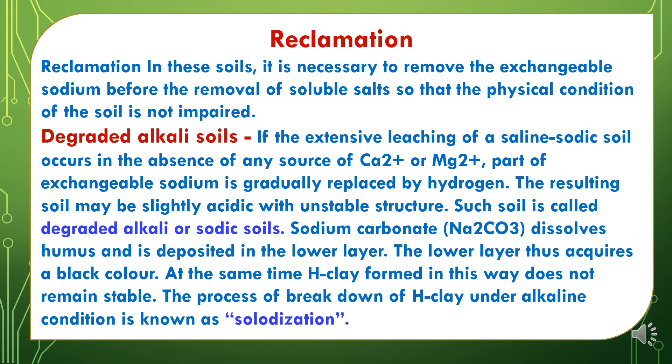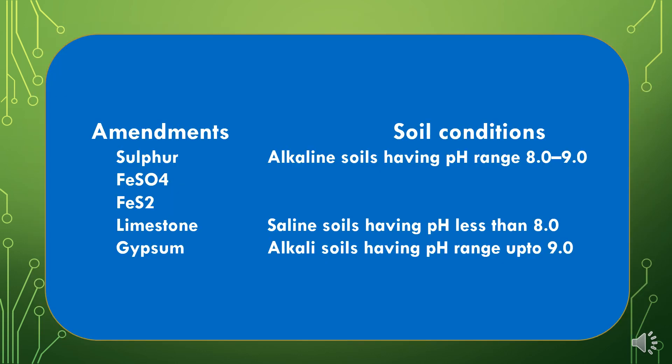Regarding reclamation of saline-alkali soils, it is necessary to remove the exchangeable sodium before the removal of soluble salts so that the physical condition of the soil is not impaired. Degraded alkali soils: if extensive leaching of a saline-sodic soil occurs in the absence of any source of calcium or magnesium, part of the exchangeable sodium is gradually replaced by hydrogen, and the resulting soil may be slightly acidic with unstable structure — such soil is called degraded alkali or sodic soil. Sodium carbonate dissolves humus and is deposited in the lower layer, which thus acquires a black color. The process of breakdown of H-clay under alkaline conditions is known as slow digestion. Amendments used include sulfur and ferrous sulfate for alkaline soils with pH 8–9, limestone for saline soils with pH less than 8, and gypsum for alkali soils with pH range up to 9.